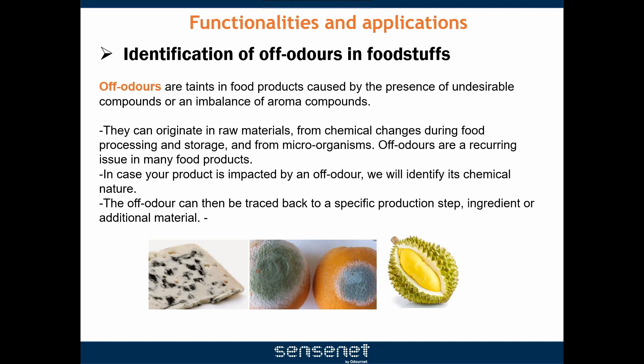Identification of off-odors in food: off-odors are taints in food products caused by the presence of undesirable compounds or an imbalance of aroma compounds. They can originate in raw materials, from chemical changes during food processing and storage, and from microorganisms. Off-odors are a recurring issue in many food products. In case your product is impacted by an off-odor, we will identify its chemical nature. The off-odor can then be tracked back to a specific production step, ingredient or additional material.